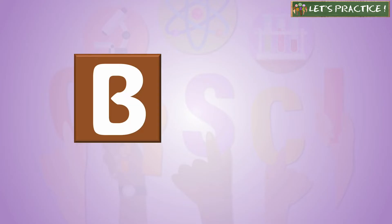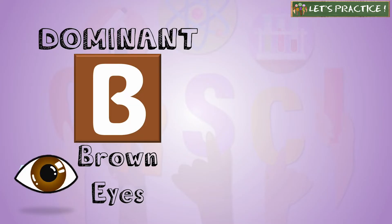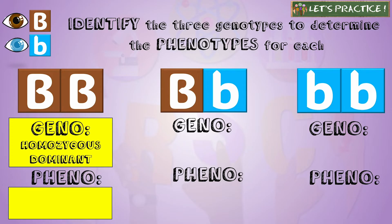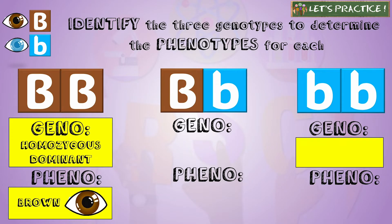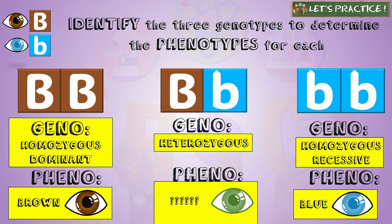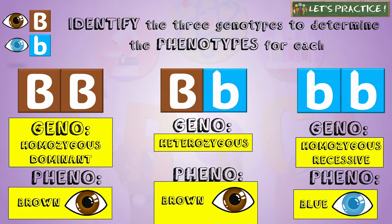We'll let capital B represent an allele for brown eyes, dominant over blue eyes lowercase b. Determine the genotypes and then the phenotype expressed. The first one is homozygous dominant so the phenotype is brown eyes; the last one is homozygous recessive so it's blue eyes; and the middle one is heterozygous — not a mixture of brown and blue, but brown, since the dominant allele is present.